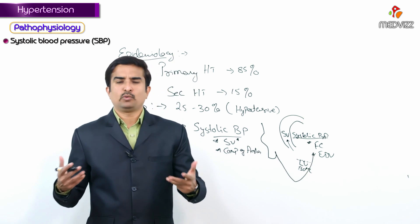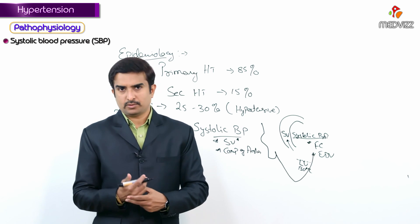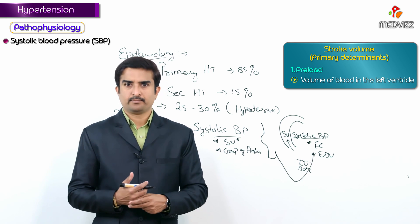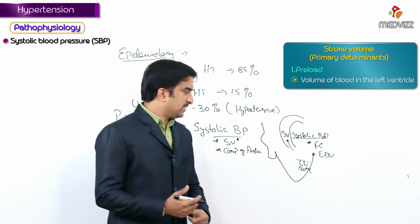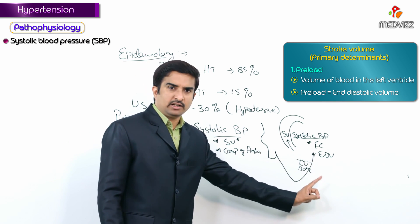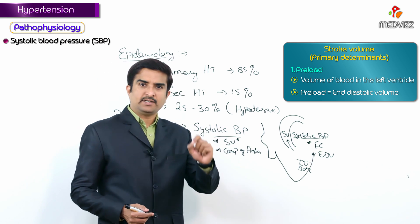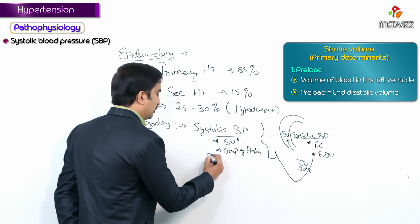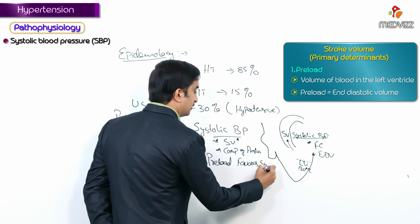The primary determinants of stroke volume are preload and afterload. Preload is the volume of blood in the left ventricle; it equals end-diastolic volume. If preload is greater, stroke volume is greater and systolic BP is elevated. Preload therefore directly favors systolic blood pressure.